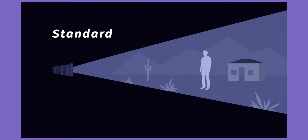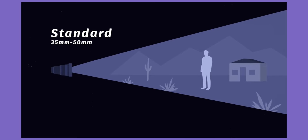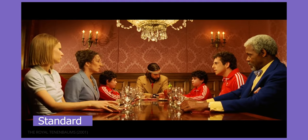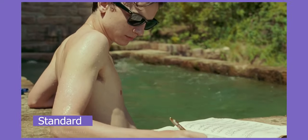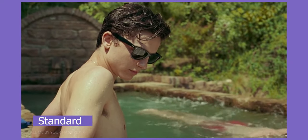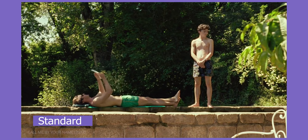Standard lenses, also called normal lenses, are lenses between 35 millimeters to 50 millimeters. The focal length of a standard lens is mostly similar to how the human eye sees the world. This becomes the ideal choice when cinematographers want a grounded and more natural presentation. The film 'Call Me By Your Name' was entirely shot on a 35 millimeter lens.